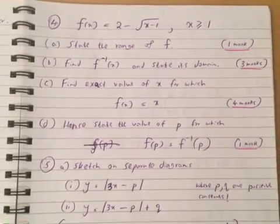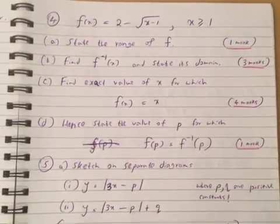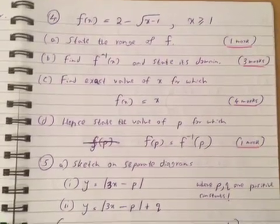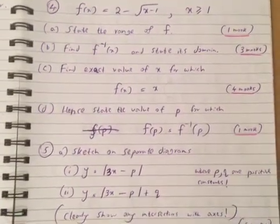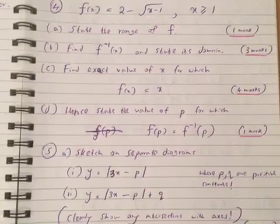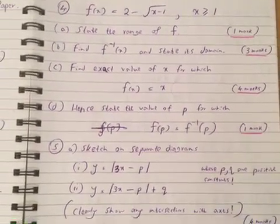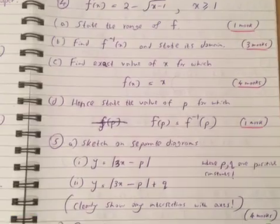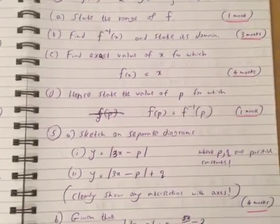And part b: Find f inverse of x and state its domain. Find exact value of x for which f(x) equals x. Part d: Hence, state the value of p for which f(p) equals f inverse of p.